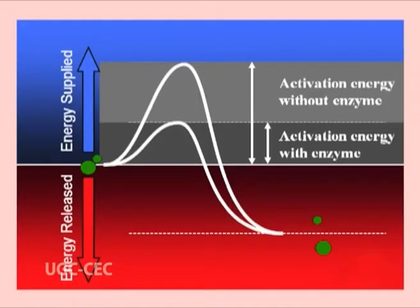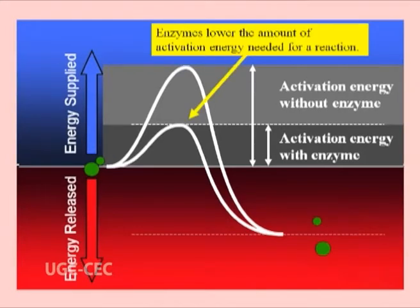Many enzymes also exhibit the ability to couple two chemical reactions that have very dissimilar reactants and products. The mechanism by which enzymes accelerate the rate of reactions is by decreasing the energy of activation — that is, the energy input needed to bring about the reaction. The enzyme divides the reaction into many smaller steps, each with a small energy of activation. In each step, covalent intermediates are formed and then the final product is released.